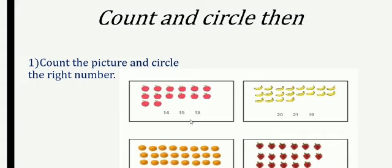Next is our second task. You have to find the correct number. For example, we have apples — count the apples: 1, 2, 3, 4, 5, 6, 7, 8, 9, 10, 11, 12, 13, 14. There are 14 apples, so circle the number 14. Similarly, count the bananas and circle the correct number. Then count the oranges, then count the strawberries, and circle the correct answer for each.